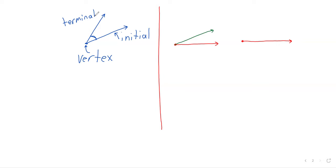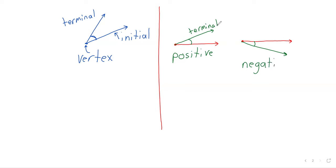Let's look at two angles where we have our vertex there and then we have a horizontal initial side. If the terminal side is up there and that's the angle we are looking at, the angle is positive. If the terminal side is down here and this is the angle that we're looking at, that angle is negative.